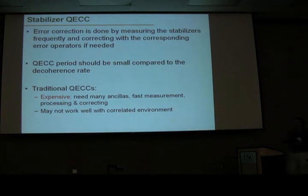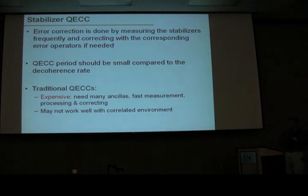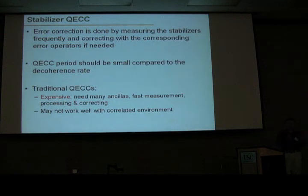Error correction, as we all know, is done by measuring the stabilizers, and then you run the algorithm. If you talk to an experimentalist, he says he wants a three-qubit code, and then says 'wow, three qubits is so much — it's very expensive.' So if we have our code at the first level, it would be difficult to build the next level even with the three-qubit code. So if we have this real estate, we better use it very well. This is all about using real estate very well.